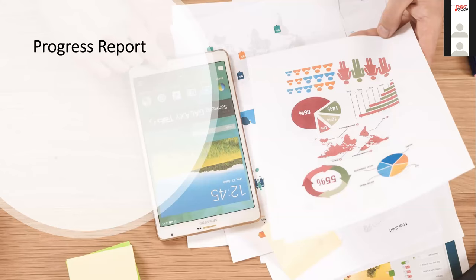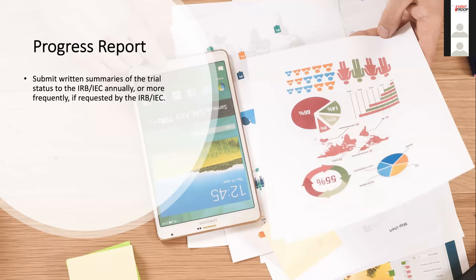So when the study is up and running, there's a lot of communication going on with the IRB. You're making sure your study team is always informed, trained, and qualified. All tasks have been delegated. You're making sure the IP is being used as per the protocol. Regarding reports, GCP says you must submit written summaries of the trial to the IRB at least annually. If it's a long trial running two, three, or four years, you must submit a written summary at least annually. If the IRB wants it more frequently - for example every three months - that's fine, but the minimum is annually.